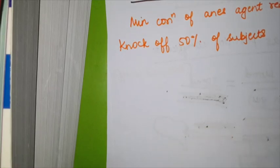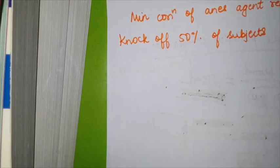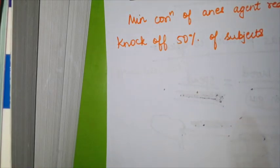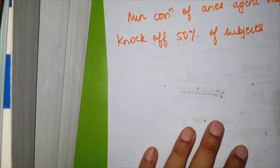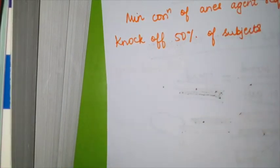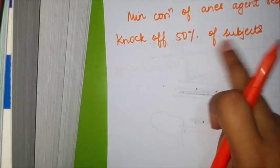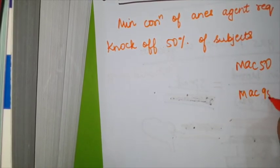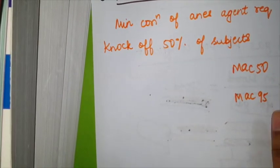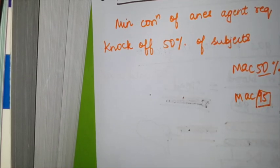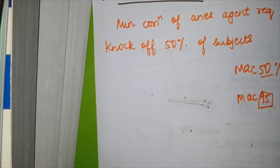So what is minimum alveolar concentration? It is how much — with how much less amount of drug — can you produce anesthesia. It is the minimum concentration of the anesthetic agent required to knock off a person. It is actually required to produce no response to any noxious stimuli or any surgical incision in 50% of the subjects. For those who want the more advanced concept: there is MAC 50 and MAC 95. MAC 50 is the amount of drug required to produce anesthesia in 50% of subjects, and MAC 95 is the amount of drug required to produce anesthesia in 95% of individuals.